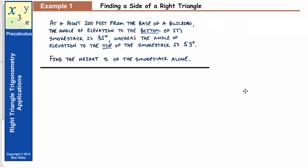At a point 200 feet from the base of a building, the angle of elevation to the bottom of its smokestack is 35 degrees, whereas the angle of elevation to the top of the smokestack is 53 degrees. Find the height s of the smokestack alone. One of the challenges is actually drawing a diagram to illustrate the situation — we have to gather that information and put it into a form we can interpret.